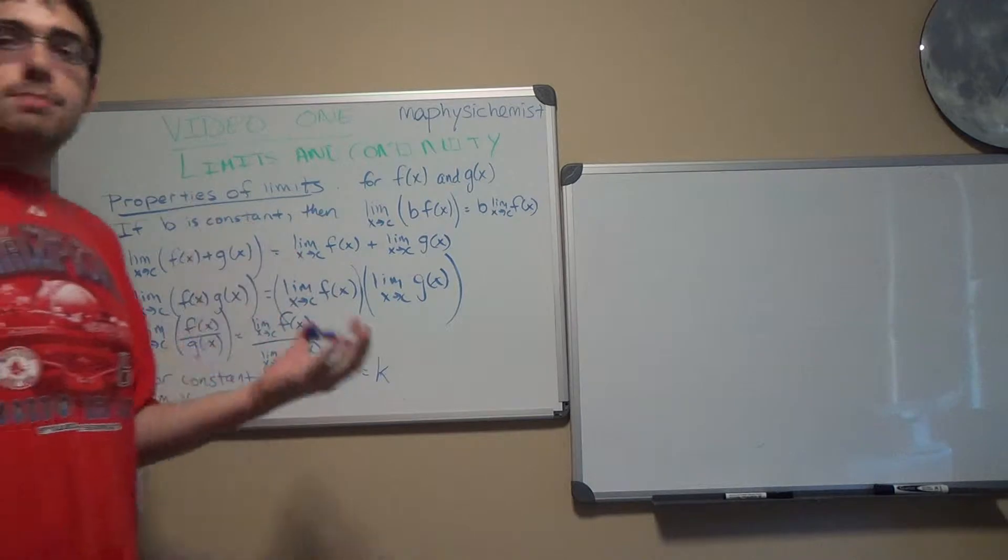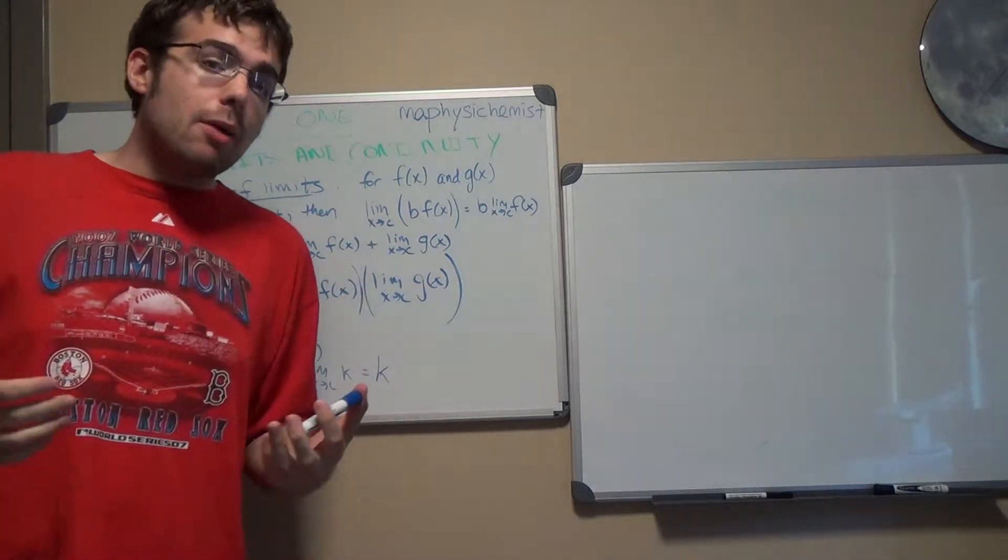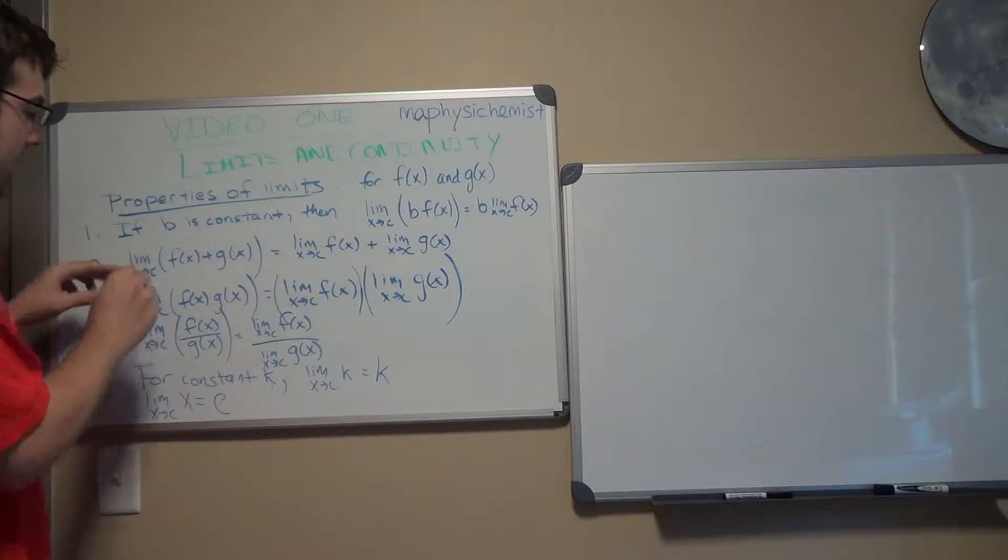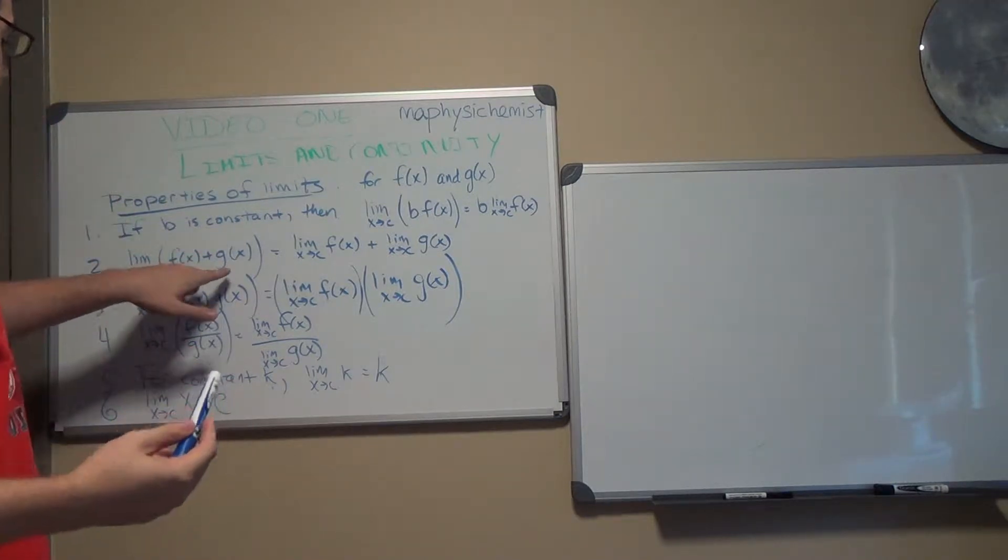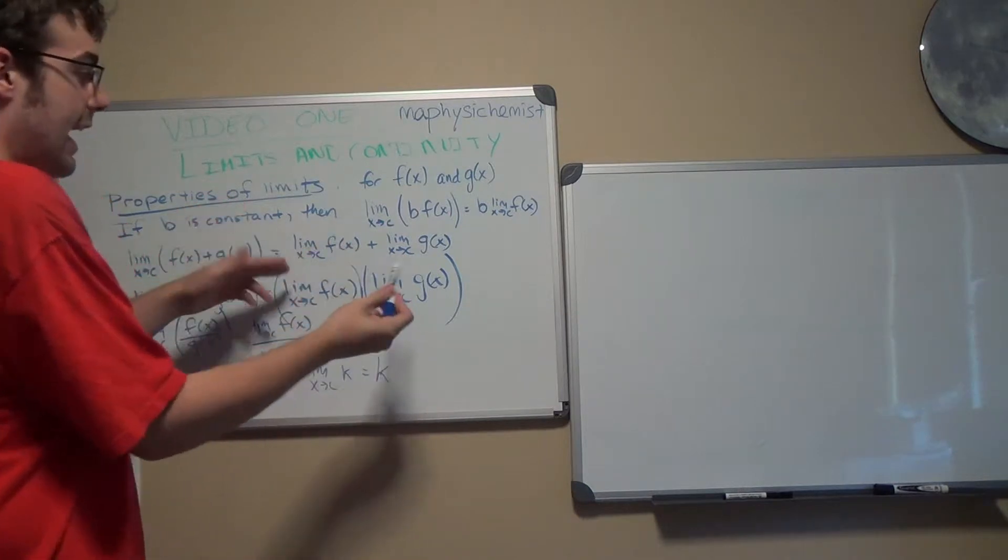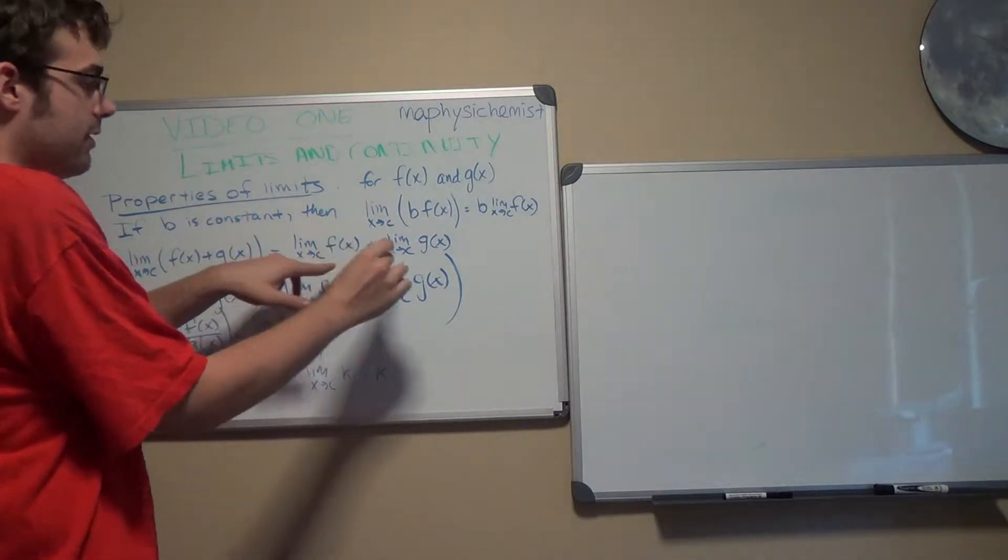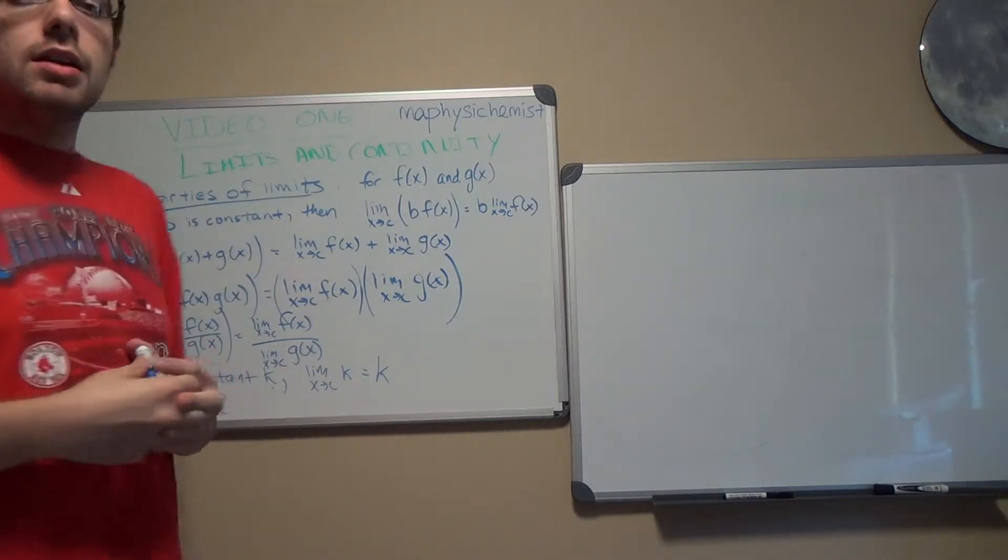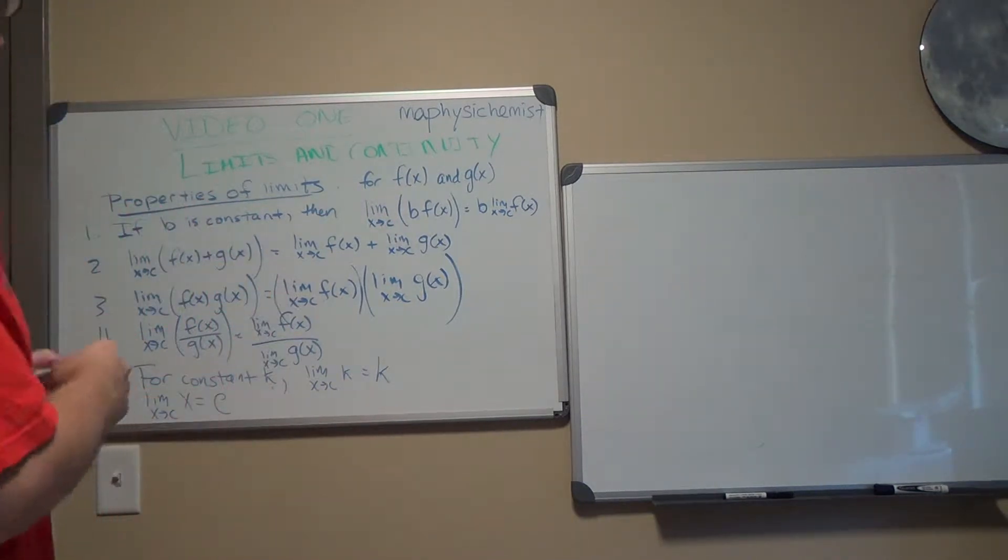The second property is basically an additive property. If you take the limit of the sum of f and g, you can add the limit of f plus the limit of g, and that'll give you the same limit.